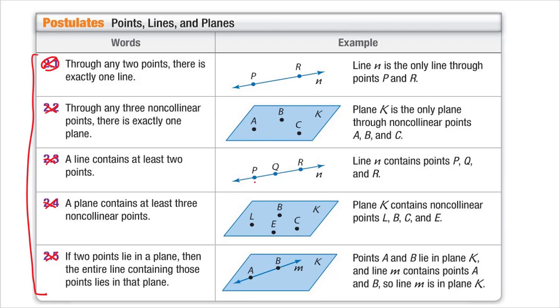A line contains at least two points. Technically, there is an infinite amount of points on a line. A plane contains at least three non-collinear points. Again, technically, there is an infinite amount of points on a line. I'm sorry, excuse me, on a plane.